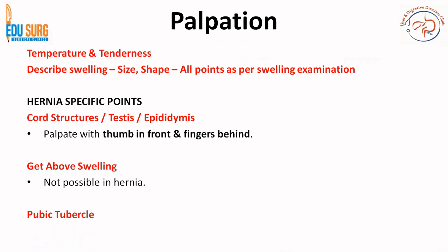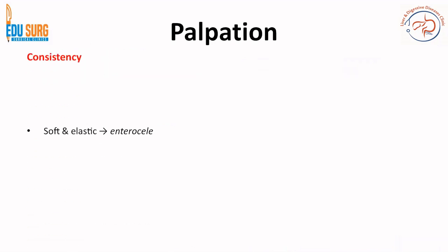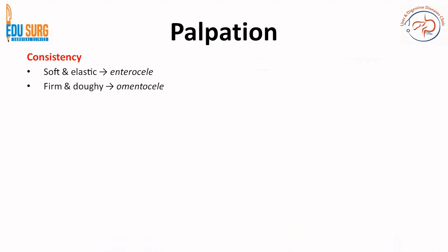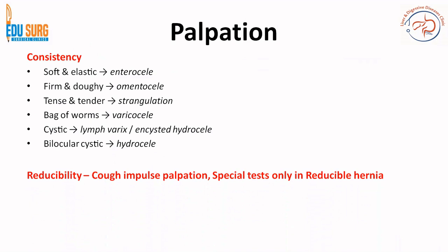Beyond this point, you can examine in both standing and supine positions. You want to reduce the hernia and then perform the specific maneuvers. Always palpate the pubic tubercle — a swelling medial to the pubic tubercle and above the inguinal ligament is inguinal hernia; the other side is femoral hernia. Consistency: soft and elastic in enterocele, firm and doughy in omentocele, tense and tender in strangulation, a bag of worms feel in varicocele. Reducibility can be confirmed by manipulation or spontaneous reduction on lying down, or by visible or palpable expansile cough impulse. Only after confirming reducibility can the next part of palpation be performed.